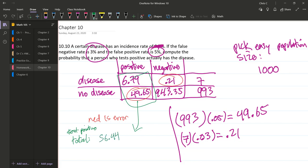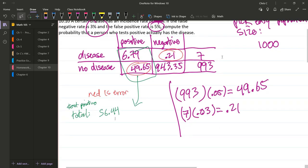Now what are we asked about? Compute the probability that a person who tests positive actually has the disease. So first we need to figure out how many people are testing positive. I'm going to switch over to green - total test positive. Now it's the sum of those two numbers. So it's 6.79 plus 49.65, which gives us 56.44. That's total testing positive.